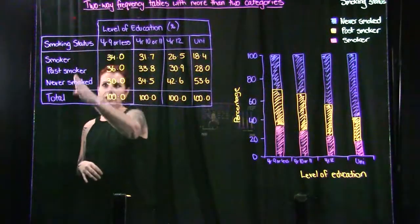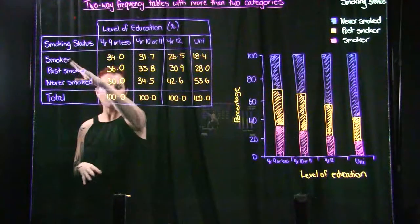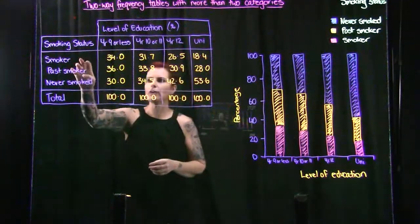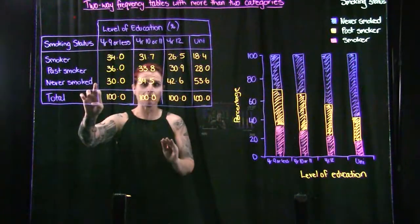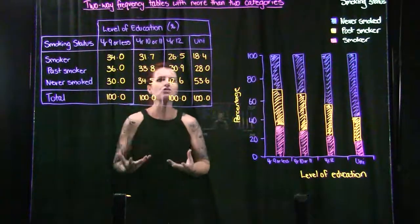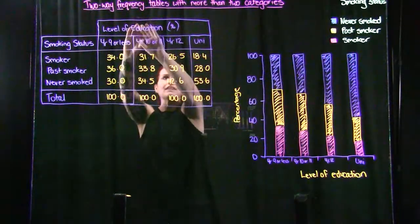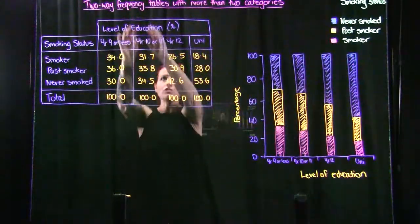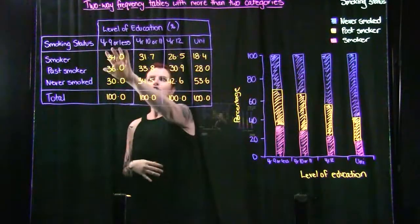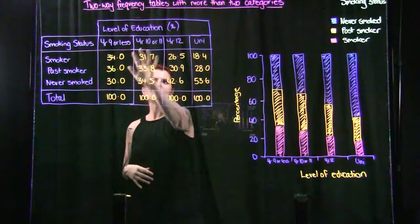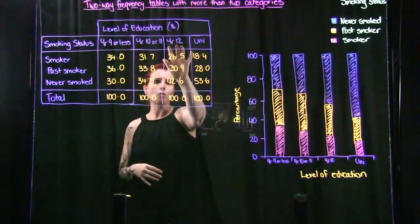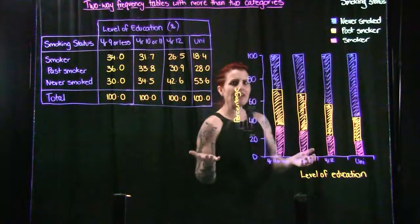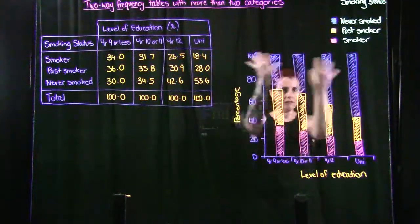We've got smoking status as the header for our rows — this is our response variable. Whether you're a smoker, a past smoker, or have never smoked is the response. What we think explains that is level of education: Year 9 or less, Year 10 or 11, Year 12, and university or tertiary.